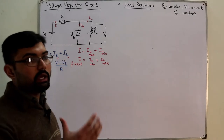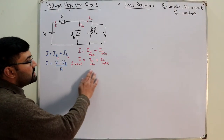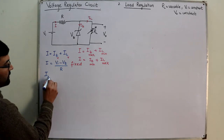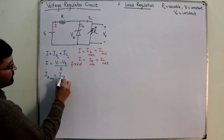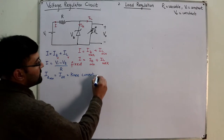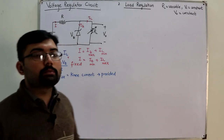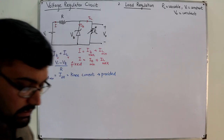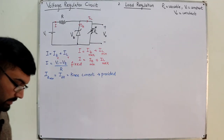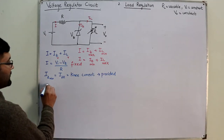The maximum Zener current is found from the power rating of the device. The minimum Zener current — IZmin — is also called the knee current, IZK. This is the minimum current in the reverse breakdown region. It is provided in exam questions or in the datasheet. If not given, you can assume it to be zero amperes. IL is also variable: IL = VL / RL = Vout / RL.